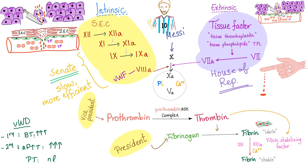The extrinsic pathway story: we need tissue factor, also known as tissue thromboplastin, tissue phospholipid, TPL, or factor 3. Factor 3 activates factor 7 into 7a, and factor 7a activates factor 10 into 10a. With factors 5, calcium, and phospholipid they form the prothrombinase complex: prothrombin into thrombin, fibrinogen into fibrin, stabilize the fibrin — and you have the thrombus.